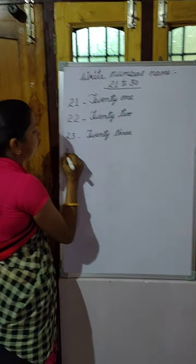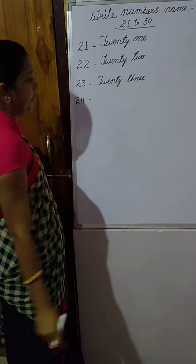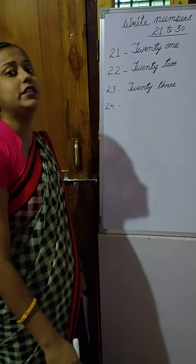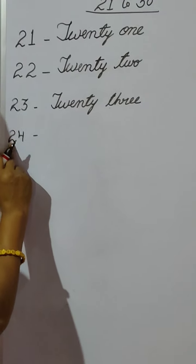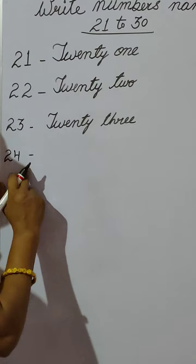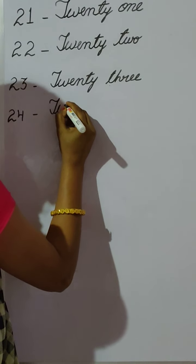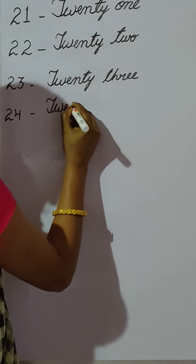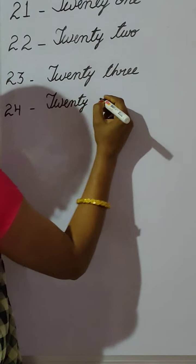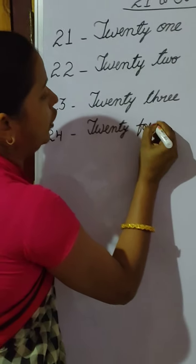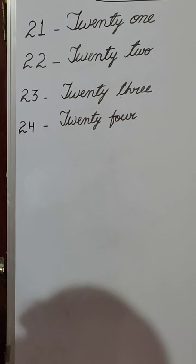Then, what is the spelling of 24? Children, first we write the spelling of 20: T, W, E, N, T, Y. Then 4 — F, O, U, R. So 24 is TWENTY-FOUR. 24. Okay. Next.